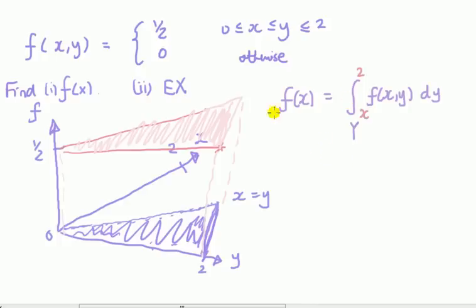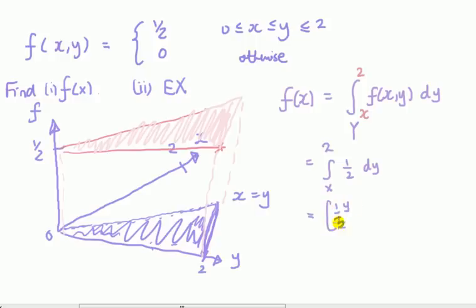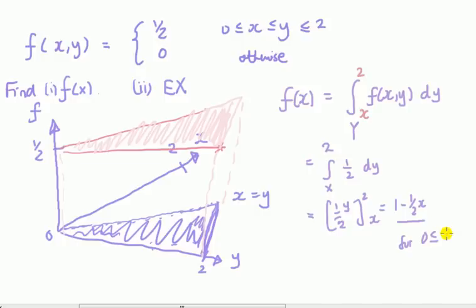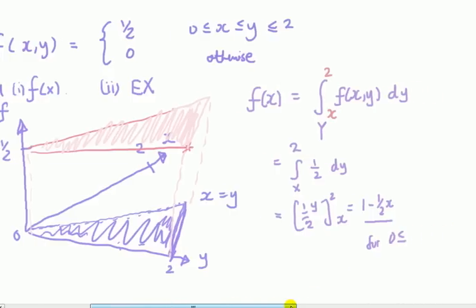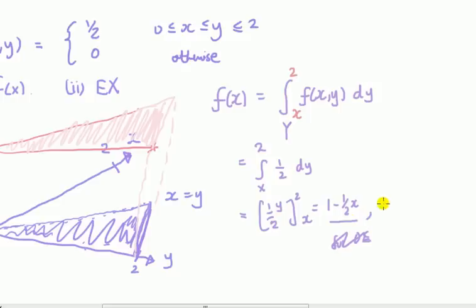The computation is pretty straightforward. We integrate one half dy from x to 2. Integrating with respect to y gives one half y, evaluated between 2 and x, which gives us 1 minus one half x.